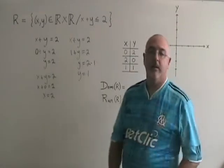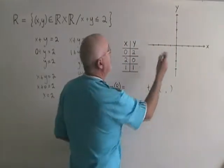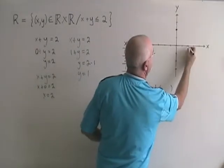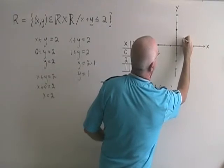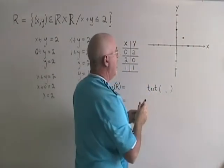I graph these three points on my coordinate plane: (0,2), (2,0), and (1,1), and I draw a line through the points.